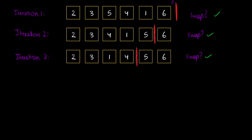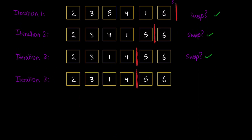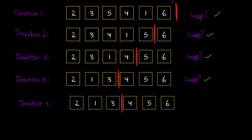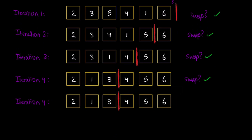Let's do another iteration — iteration 4. We move our end index down, so now we're only considering the first three elements. 2 and 3: 2 is less than 3, correct. 3 and 1: we have to swap those. We did perform a swap, so we duplicate the swap indicator and go for another iteration, moving the ending index left again.